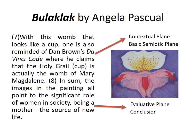With this womb that looks like a cup, one is also reminded of Dan Brown's Da Vinci Code, where he claims that the Holy Grail is actually the womb of Mary Magdalene. In sum, the inner imagery all points to the significant role of women in society — being a mother, the source of new life. Number seven is an example of contextual plane — I related the work to another work, in that case the novel by Dan Brown. And if you remember, in the third step we wrote wine glass as one of the images we see in the painting, so that's related to the Holy Grail or the cup, which Dan Brown calls the womb of Mary Magdalene. In the novel, it's not a tangible cup they were searching for, but the womb of Mary Magdalene.